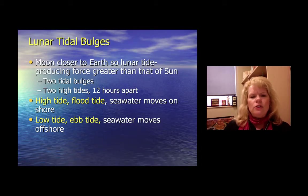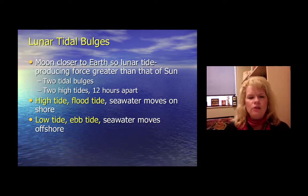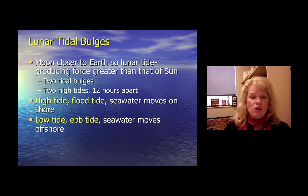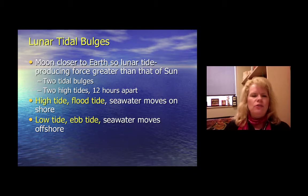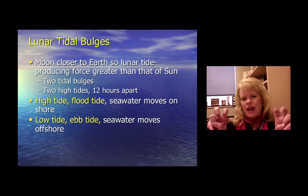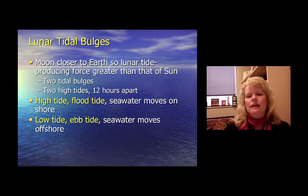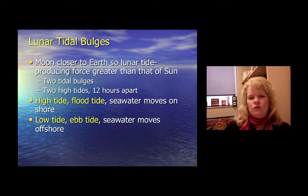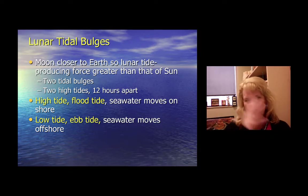When the Moon is closer to the Earth, lunar tide produces a force greater than that of our Sun, and you'll have two tidal bulges — two high tides — 12 hours apart. The high tide is the flood tide, where seawater actually moves onto the shoreline or dry land. At low tide, we refer to that as an ebbing or ebb tide, where seawater moves offshore back towards the ocean. Ebb and flow — you've probably heard that term — it comes from tidal terminology.